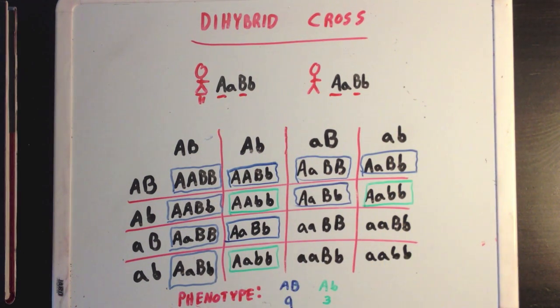Three will lead to the dominant phenotype for one of the two genes, and only one genotype will lead to the recessive phenotype appearing for both genes. This 9-3-3-1 ratio will come up quite often as you study genetics.